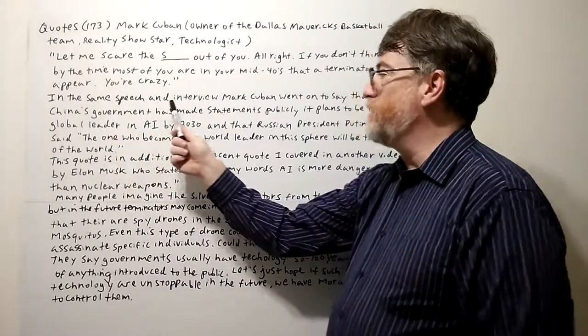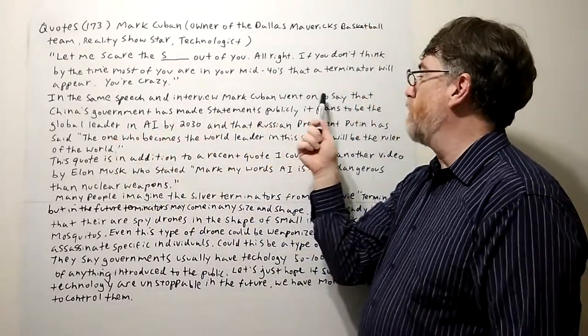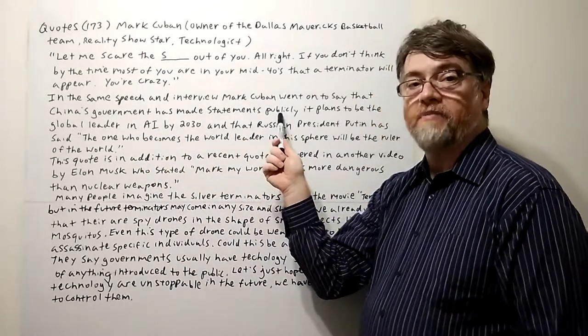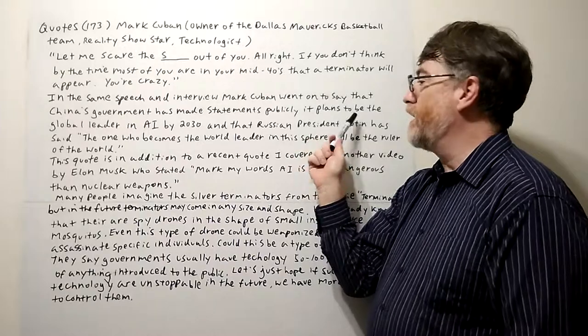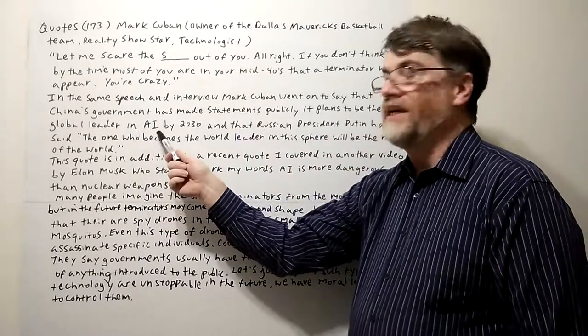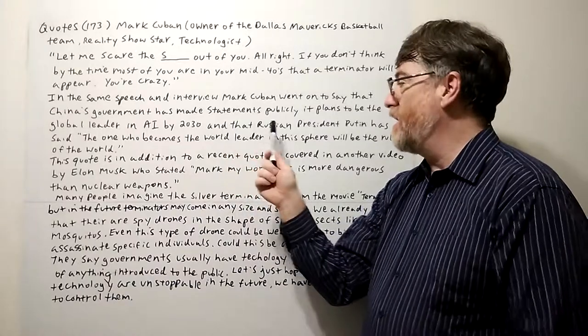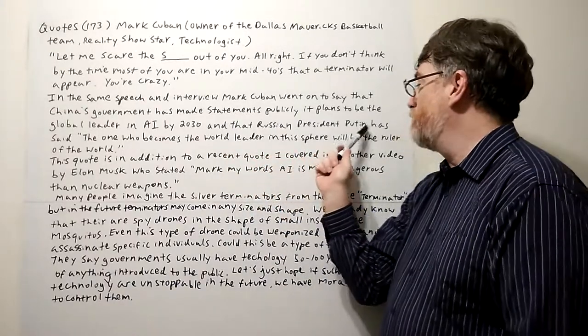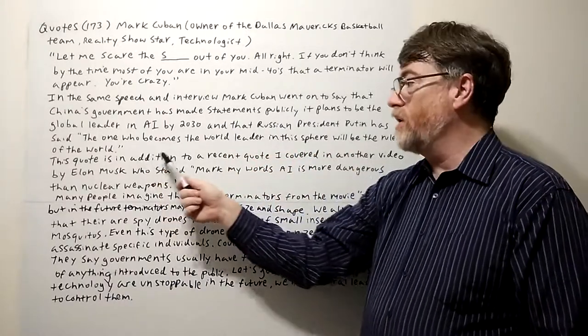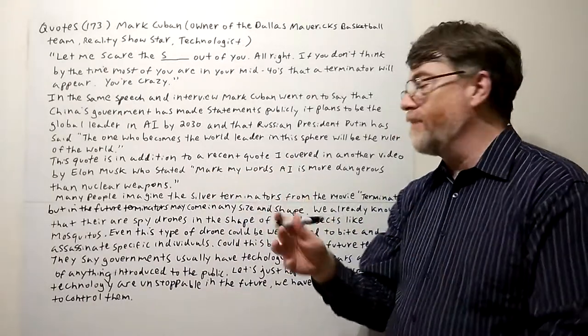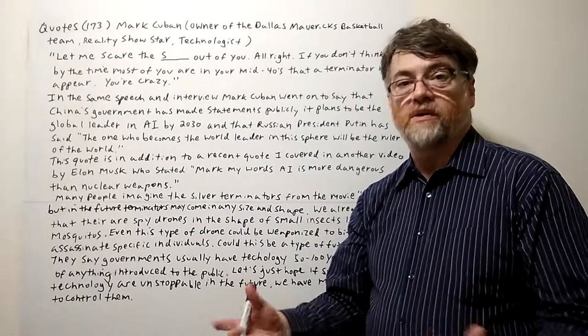In the same speech and interview, Mark Cuban went on to say that China's government has made statements publicly that it plans to be the global leader in AI by 2030, and that Russian President Putin has said the one who becomes the world leader in this sphere will be the ruler of the world.